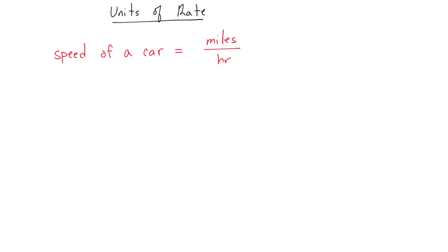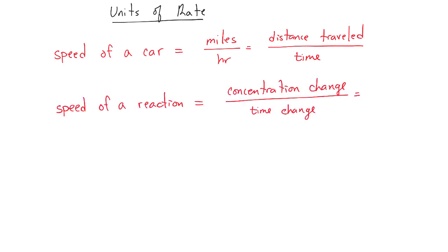As far as the units of rate, if we consider the speed of a car traveling on the road, we would measure that in miles per hour, or distance per unit time. For the speed of a chemical reaction, we measure concentration change per unit time. The unit of concentration is molarity, and the unit most often used for time is the second.